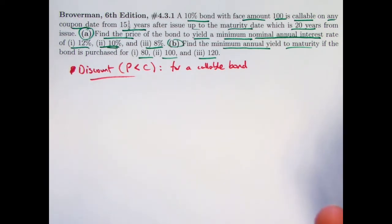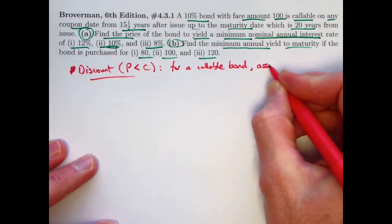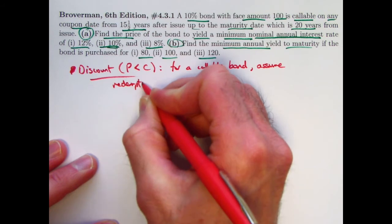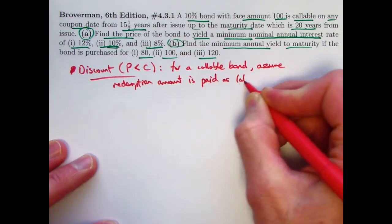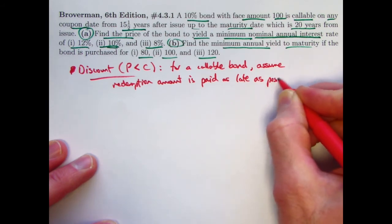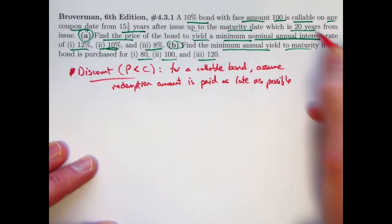When the bond is bought at a discount, your coupon payments are not very high. They're not even covering the interest that you were owed according to the yield rate. So the balance is going up. You know, since you're not getting very much in coupons, you would like to get that final redemption amount as soon as possible. That would be most beneficial for you. On the flip side, for the borrower, the government entity or the corporation, they want to do what's best for them. They want to delay their final redemption as late as possible. So you should assume the worst case for you, you should assume that the redemption amount is paid as late as possible. Assume the redemption amount is paid as late as possible, according to the terms of the contract, which in this case would be 20 years, n equals 40.